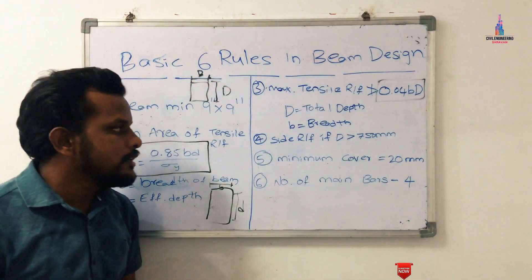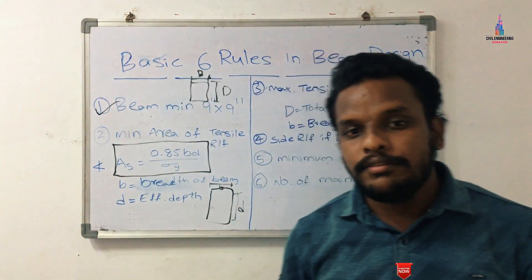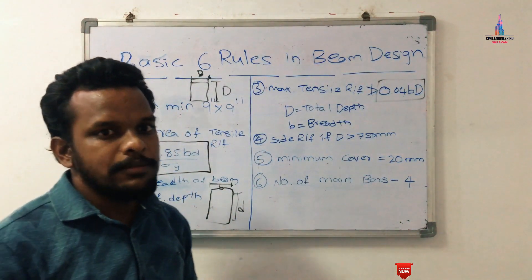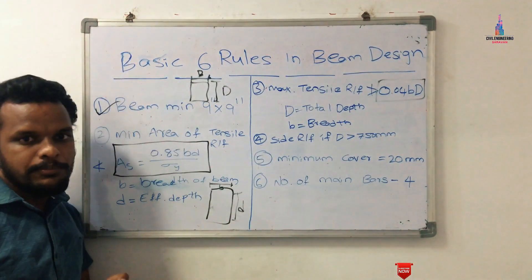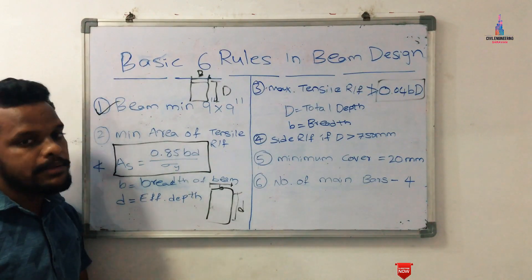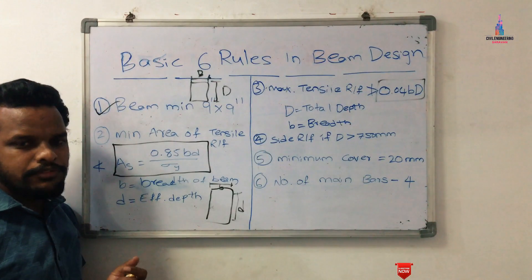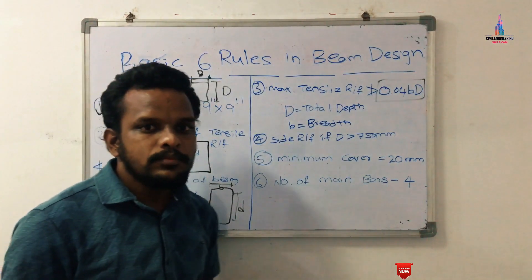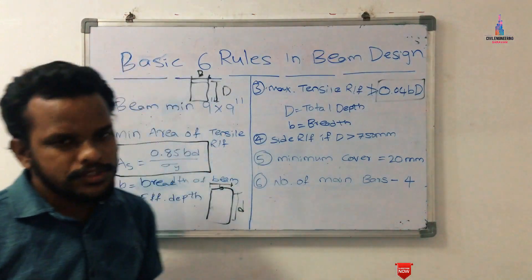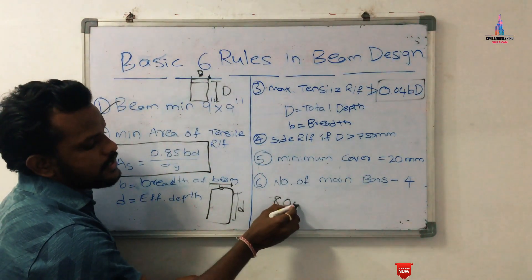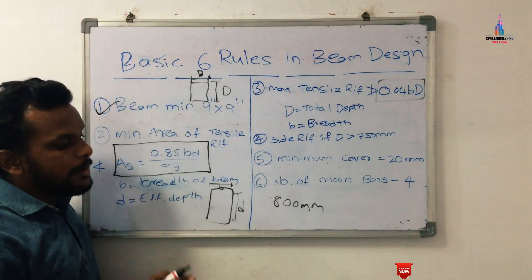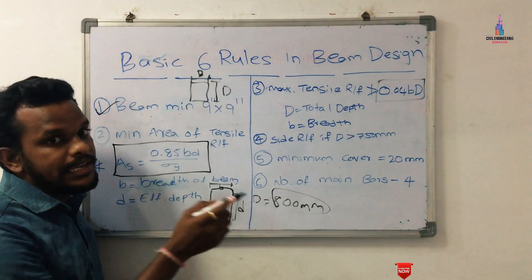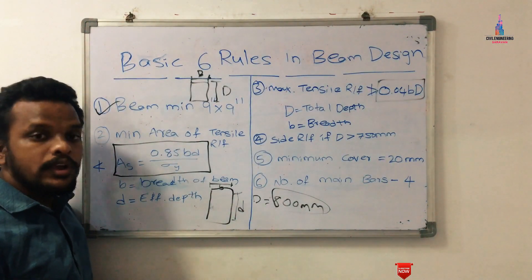The fourth rule: side reinforcement should be provided if the depth of the beam exceeds 750 mm. The depth of a beam is directly proportional to its length — a longer beam requires greater depth. For example, for a beam length of 10 meters or higher, a large depth may be required. If the calculation gives a depth of 800 mm, that exceeds the 750 mm threshold.